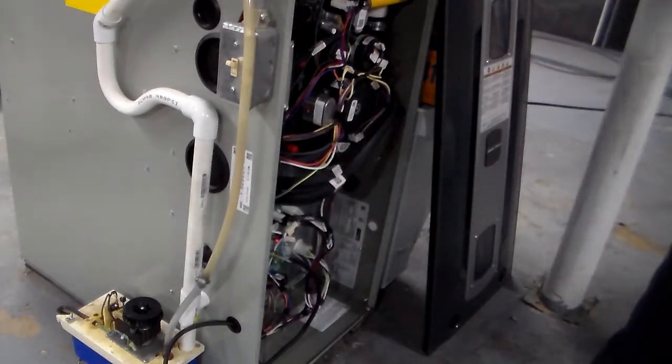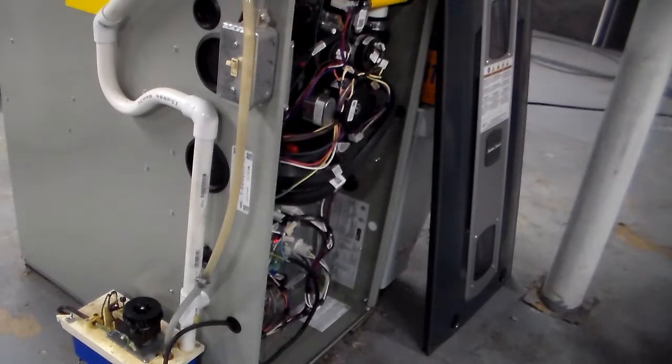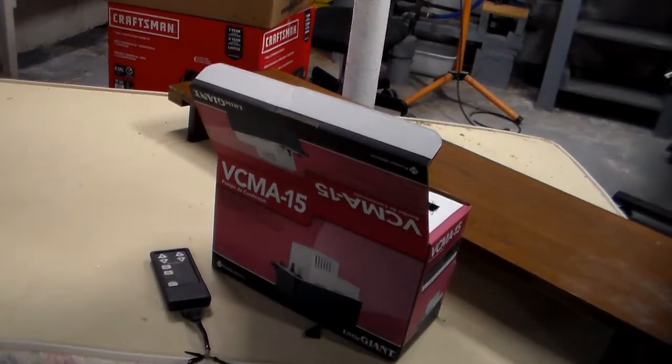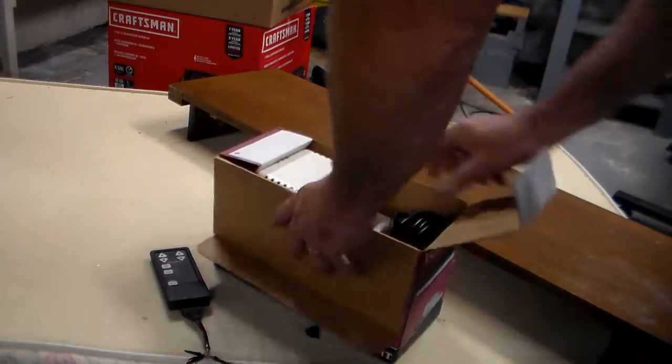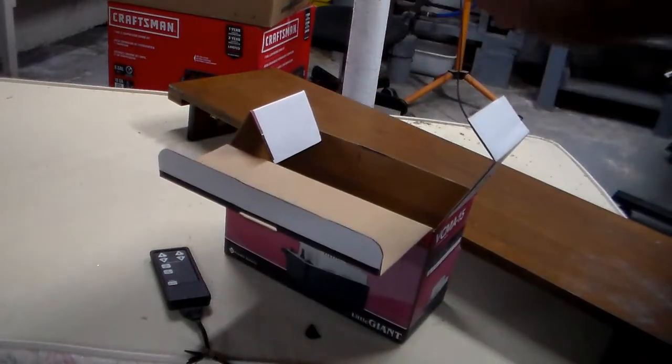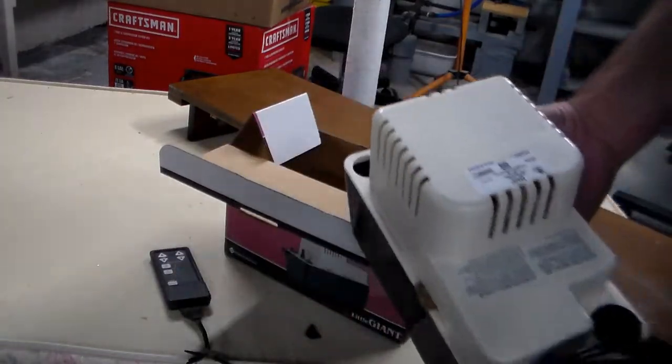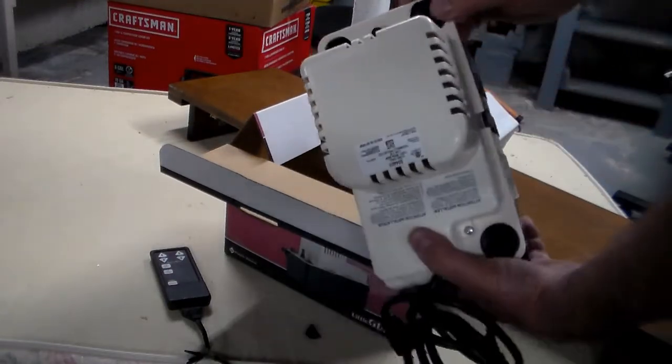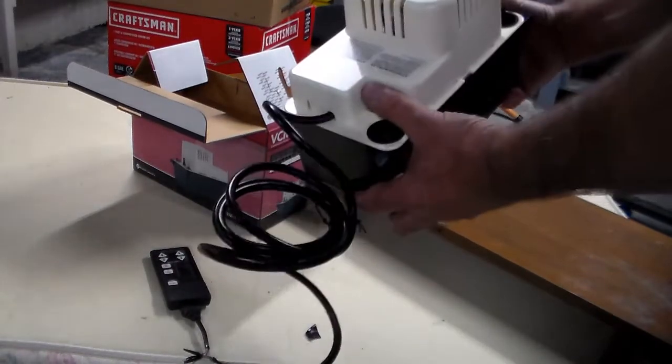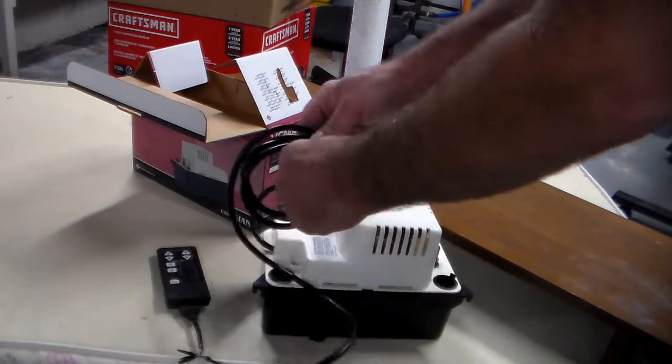All right, here we go. Got it from Home Depot, ordered it, it was here in just a couple days. Looks a little bit different than that one. It has, you can pull these plugs up and put them where they're needed. I guess this is the check valve right in the front. And like I said, I'll have to cut this cord.